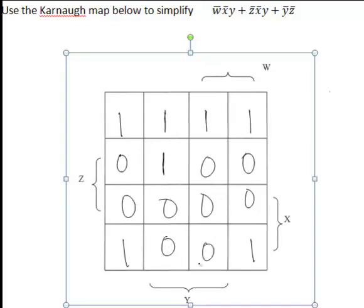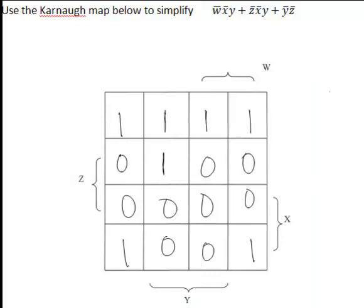To find a simplified expression for this Karnaugh map, we now need to look for squares of ones. We look for eight squares of ones. None of those here. Then we look for four squares of ones.